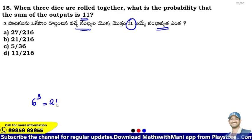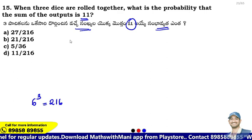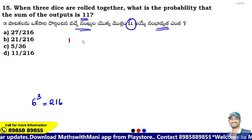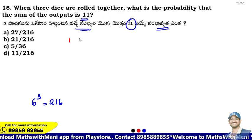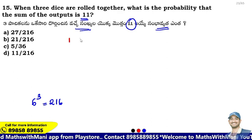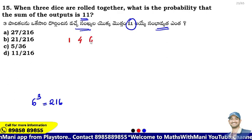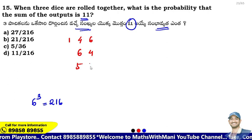For example, if we start this problem with sum = 11, what are the possibilities? First dice is 1, next two dice must sum to 10. The possibilities include: 3, 4, 6 and 5.